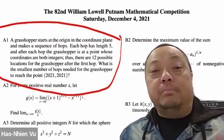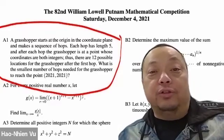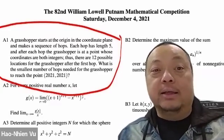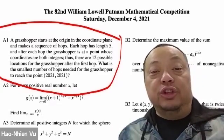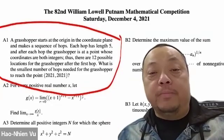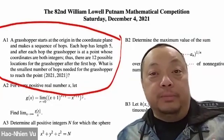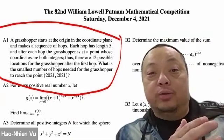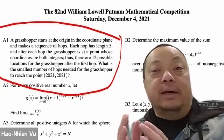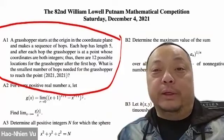The Putnam Math Competition is a contest for undergraduate students in the US and Canada. Each year, it takes place on the first Saturday of December, and it contains 12 problems — 6 in the morning over 3 hours, and 6 in the afternoon over 3 hours, with a 2-hour break in between.